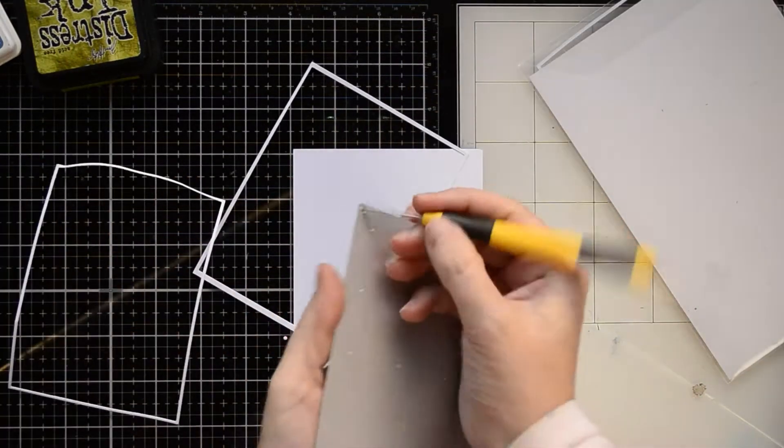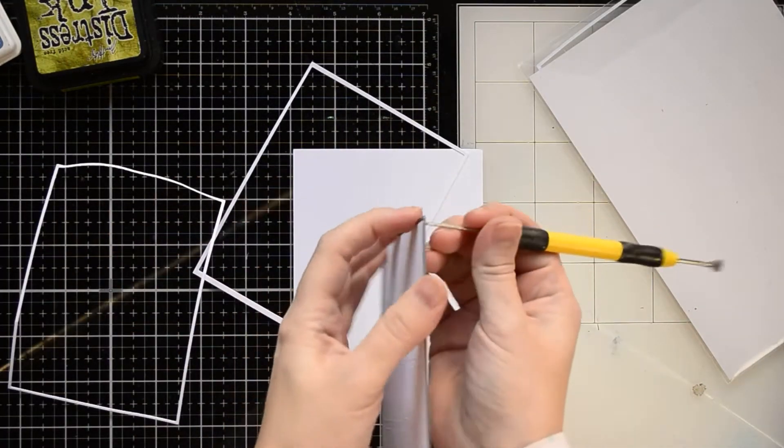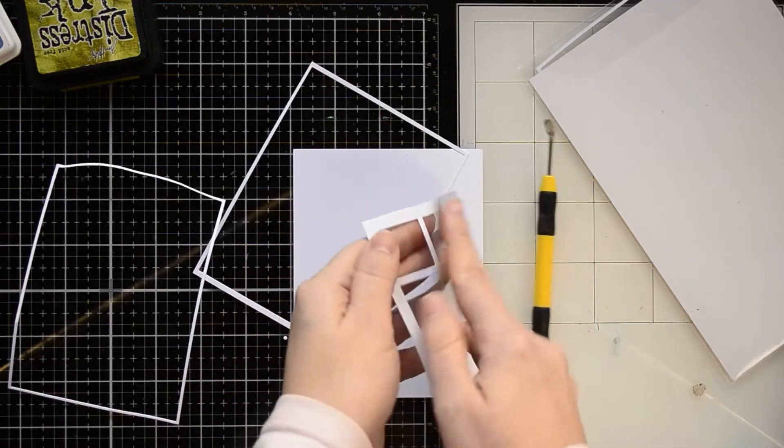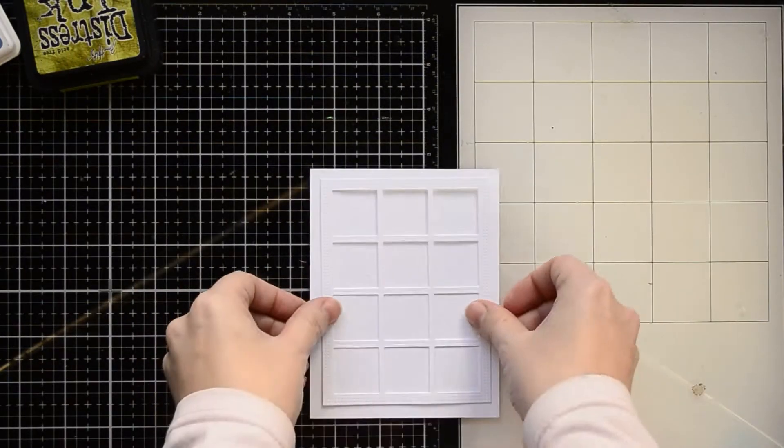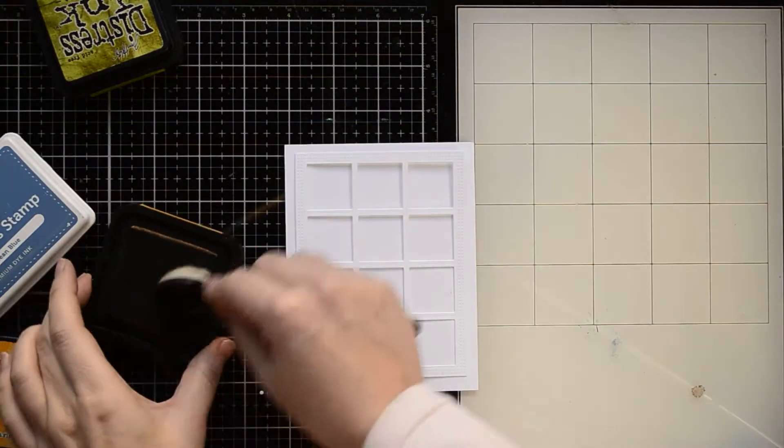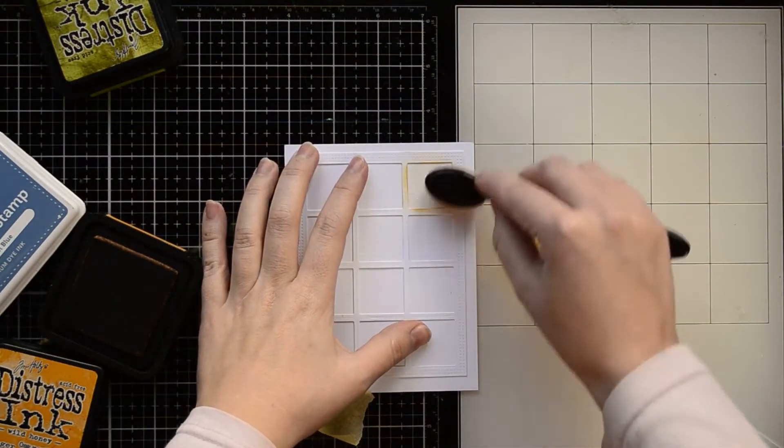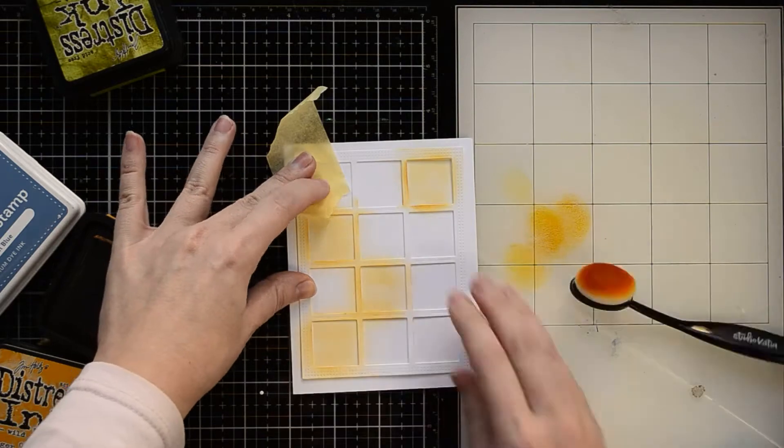It's called dotted square frame die and it's an A2 cover plate die. First I'm going to cut out the square frame from white cardstock. You may use scraps or copy paper because next I'm going to use this die cut as a stencil.